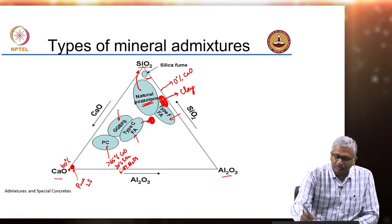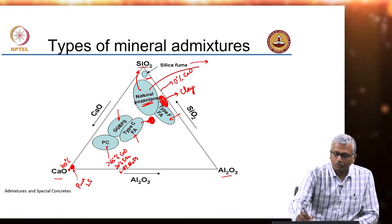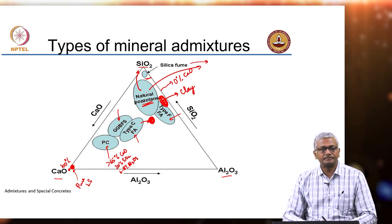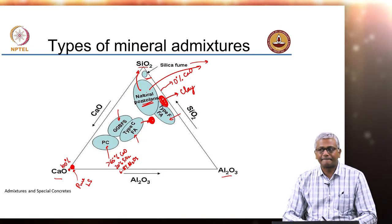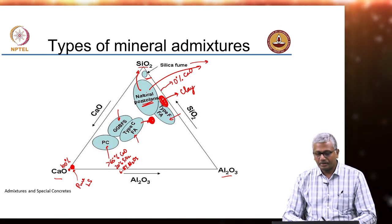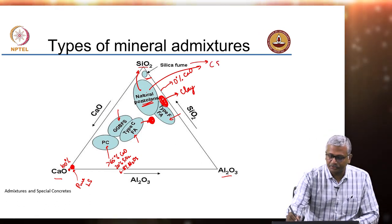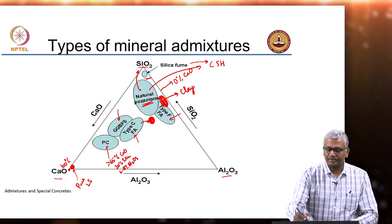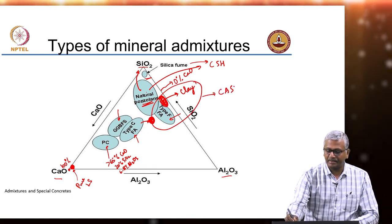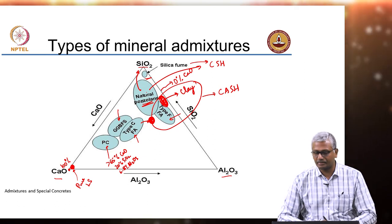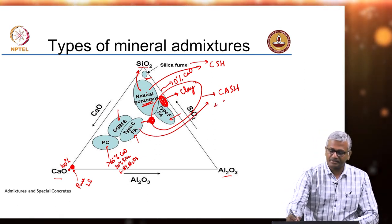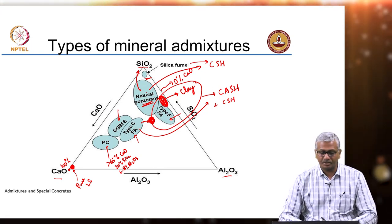For instance, when it is natural pozzolans or silica fume, alumina is almost 0, so you will get C-S-H. On the other hand, with clay or Type F fly ash, you may get C-A-S-H — calcium alumino-silicate hydrate. Type C fly ash may also get C-A-S-H, plus regular C-S-H may also form because of its high-calcium nature.